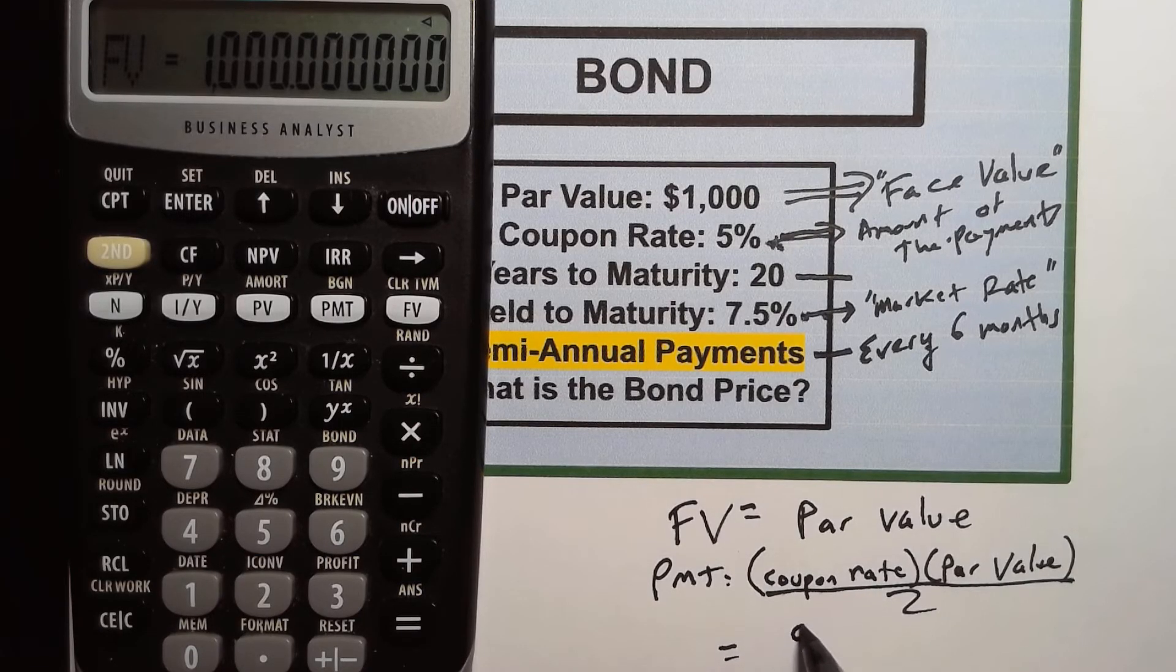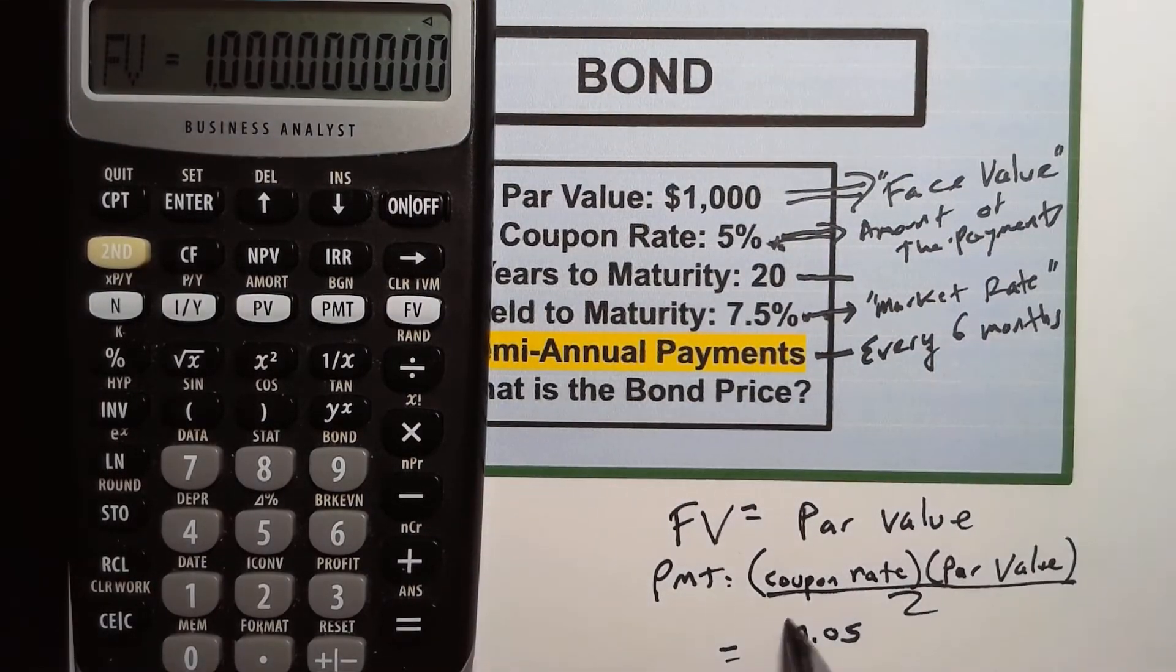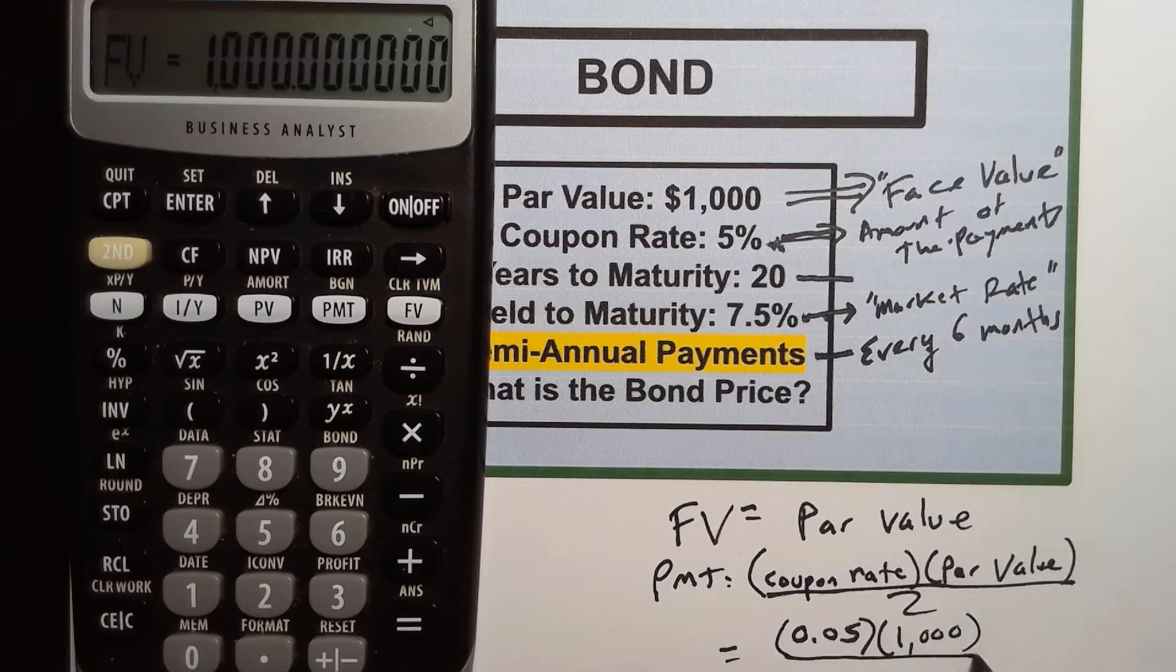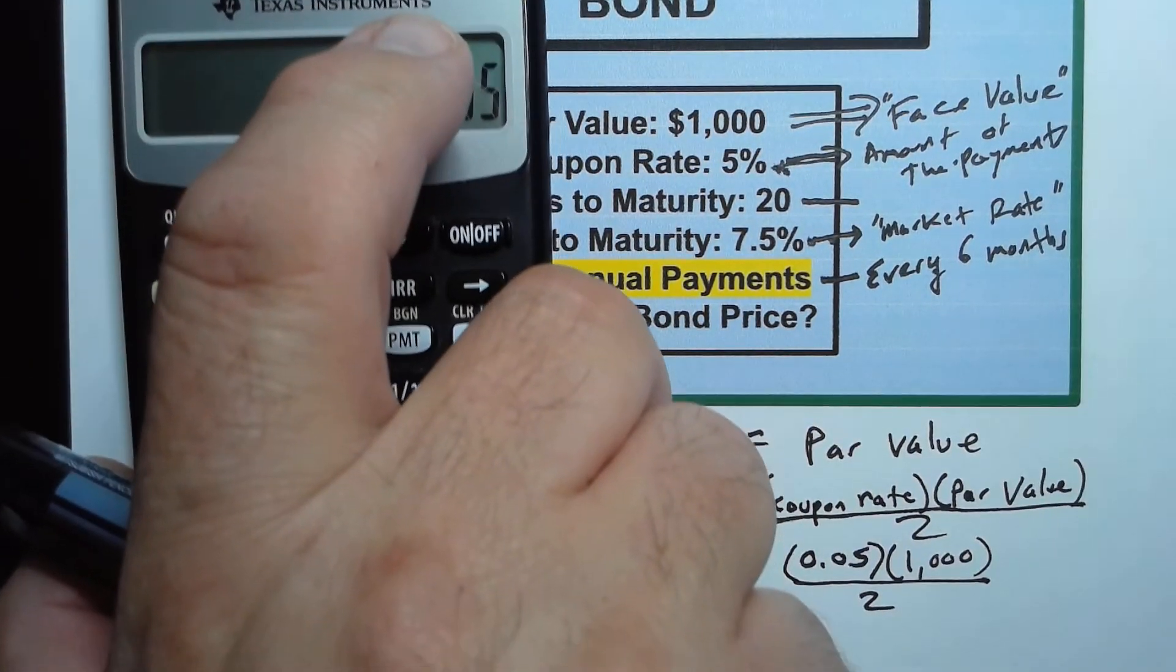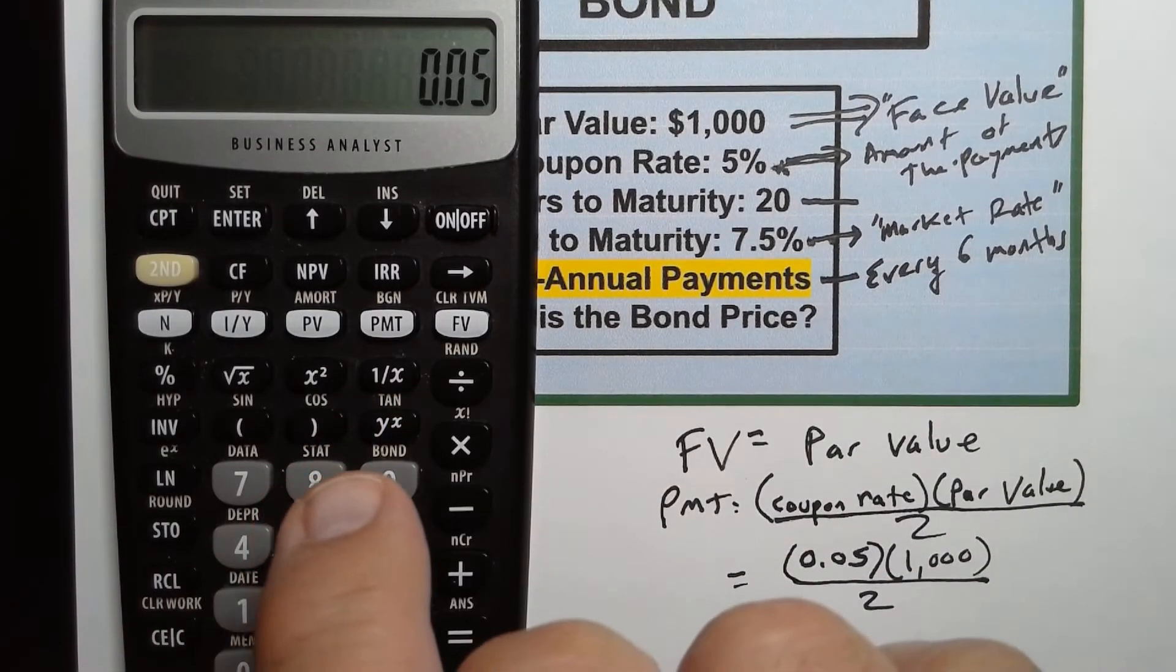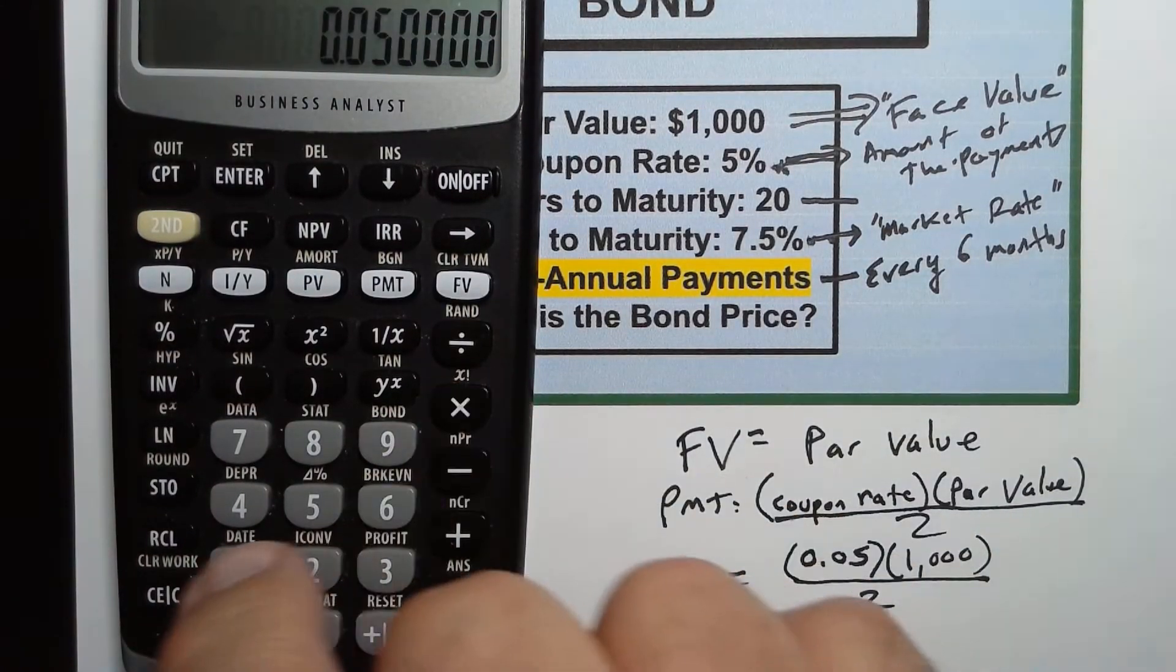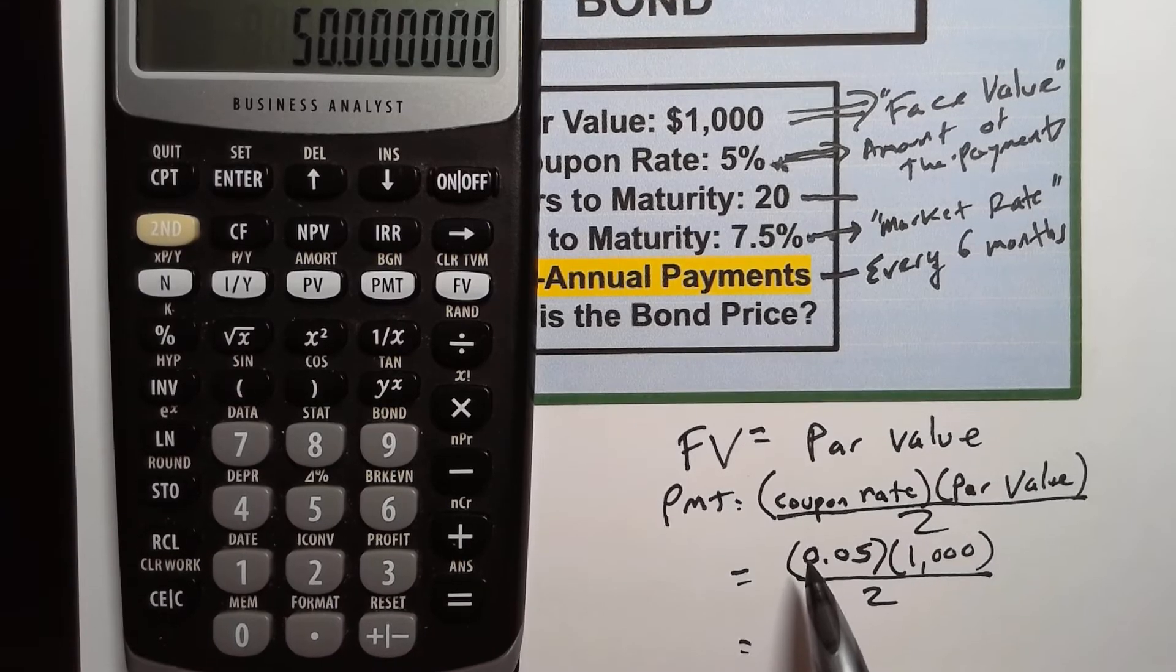So the payment is going to be the coupon rate in this case is five percent and we know that we can write a percentage as a decimal 0.05. Make sure you get that 0.05. Some people accidentally only move it over one space and it would be the equivalent of 50 percent. If you don't remember how or need a refresher on how to convert decimals to percentages I have a video linked up here for you. All right so we have the 0.05 times the par value in this case the par value is one thousand and we're going to divide by two.